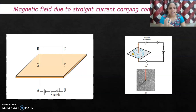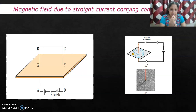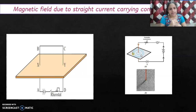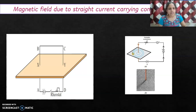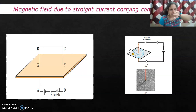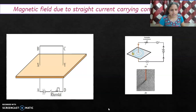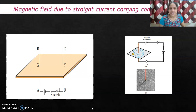Near the conductor the magnetic field strength is more — you can see the field lines are very close to each other. When you move away from the conductor, the field lines spread apart and the strength is less. This is very similar to a bar magnet: when you move away, the magnetic field strength decreases. There is an arrow shown in the diagram indicating the direction of the magnetic field. So how do you find the direction of magnetic field due to a straight conductor?